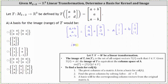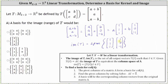So we can say the image or range of the transformation is equal to the span of the set containing the vectors (1, 1, 1) and (1, 0, negative 1). And therefore, a basis for the image or range would be the set containing the vectors (1, 1, 1) and (1, 0, negative 1).